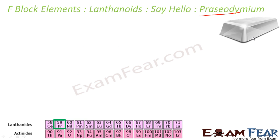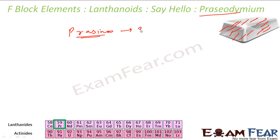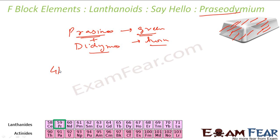Praseodymium is a soft, silvery, malleable, ductile metal. It is magnetic and has electrical, chemical, and optical properties. It is found in compound form and develops an oxide layer coating due to oxidation. It is named from the Greek words 'prasinos' meaning green and 'didymos' meaning twin, because its oxides are green in color. It has one stable and many radioactive isotopes. Its electronic configuration is 4f³ 6s².